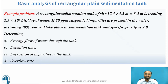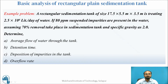All these terminologies can be explained with an example problem. A rectangular sedimentation tank of size 17.5 m (length) × 5.5 m (breadth) × 3.5 m (height) is treating 2.5 × 10⁶ liters per day of water. 80 ppm suspended impurities are present, 70% removal is assumed, and the specific gravity is 2.0. We need to determine: average flow of water, detention time, deposition of impurities, and overflow rate.